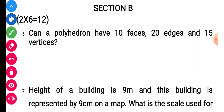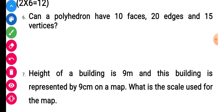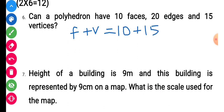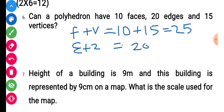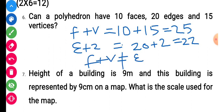Section B, Question 6: Can a polyhedron have 10 faces, 20 edges, and 15 vertices? Check using Euler's formula. F plus V equals 10 plus 15, that is 25. E plus 2 equals 20 plus 2, that is 22. Since F plus V is not equal to E plus 2, Euler's formula is not verified. So this polyhedron is not possible.